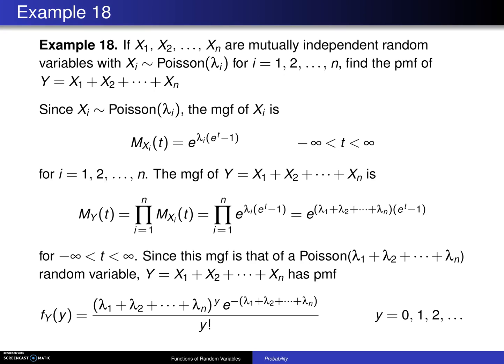Here's an example of using the moment generating function technique. If x1, x2, up to xn are mutually independent random variables with x sub i having the Poisson distribution with parameter lambda i for i equals 1 to n, find the probability mass function of y, which is the sum of the x sub i's.